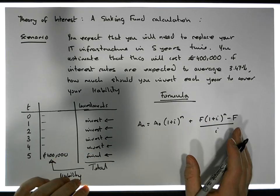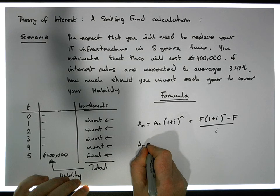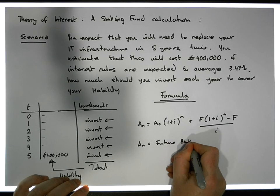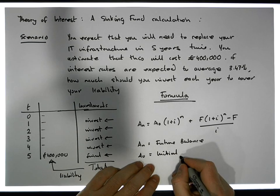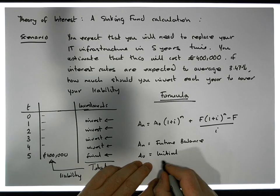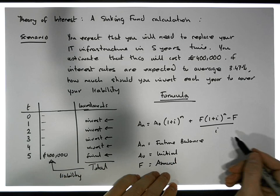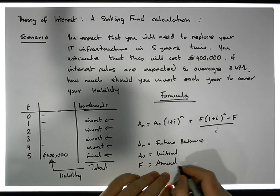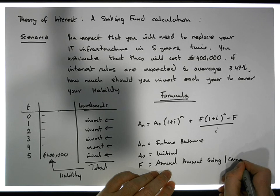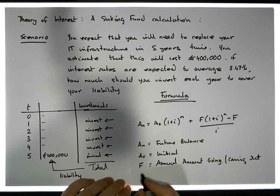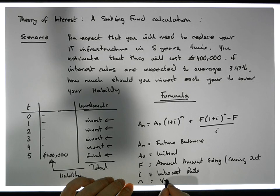We're considering this to be an account where we have money going in, money going out, a balance at a particular period of time, and an interest rate associated with it. A_n is the future balance of this account. A_0 is the initial balance, initial investment, or initial borrowings — an initial amount. f is the annual payments in or out of the account. i is the interest rate and n is the number of years.